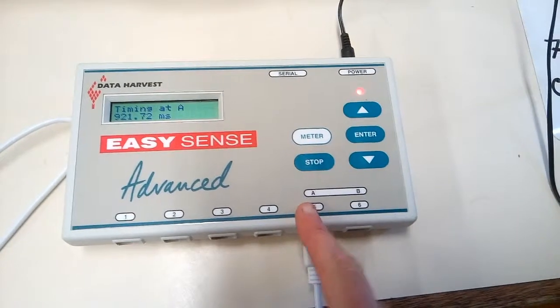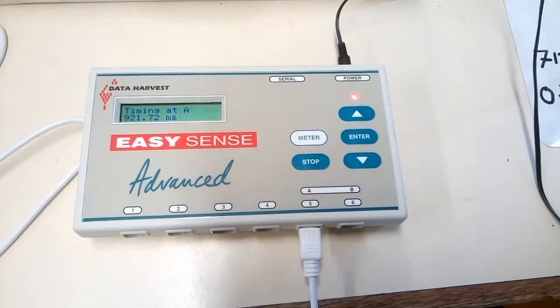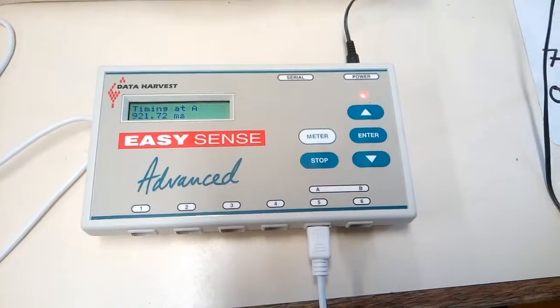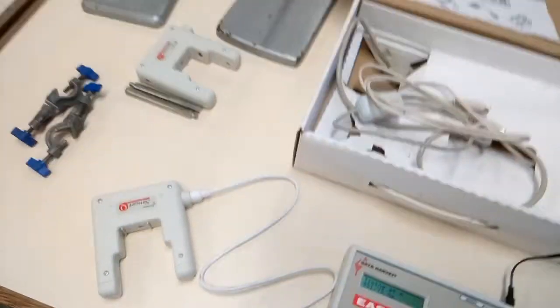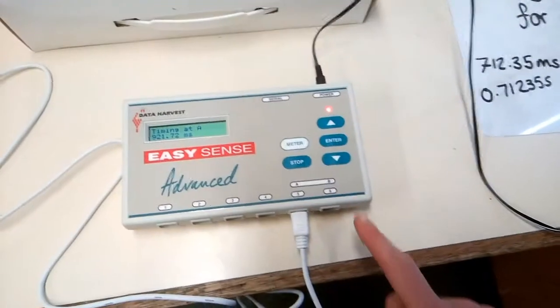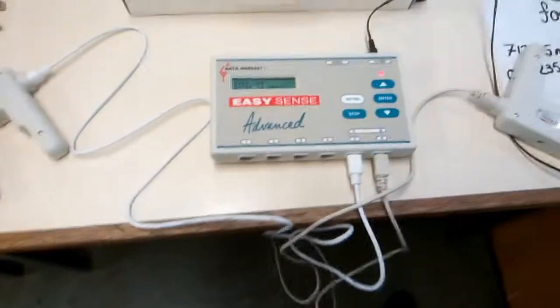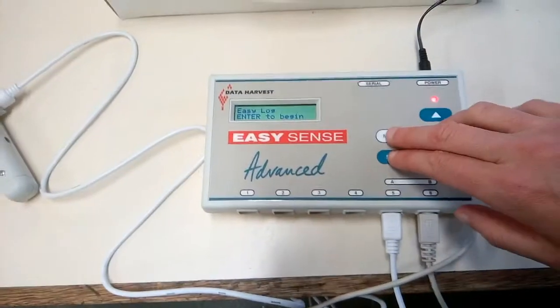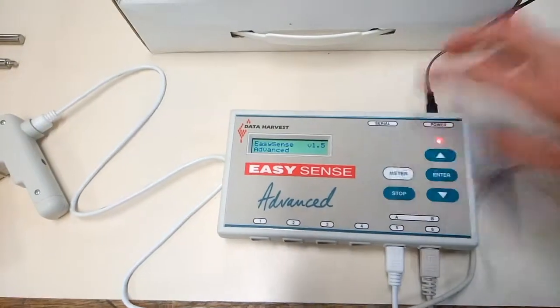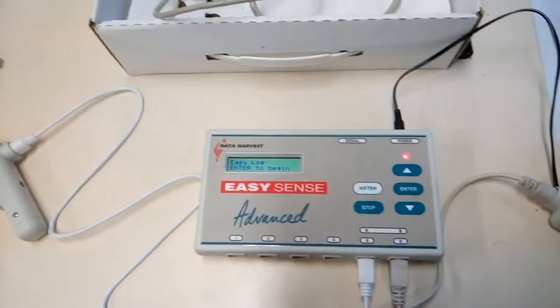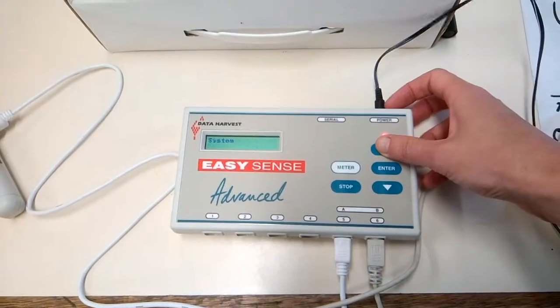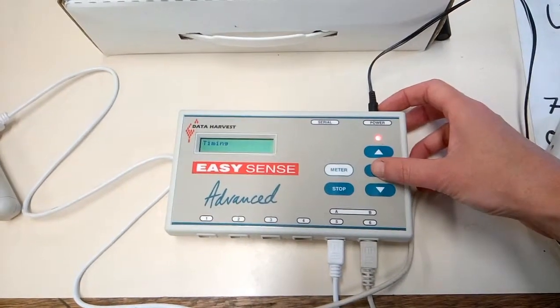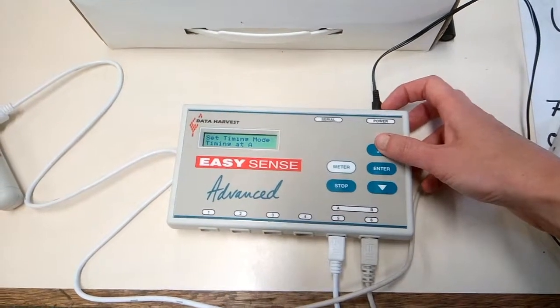The second thing that we can use it for is timing at A and B. To do that, you're going to need another light gate, and we're going to plug it in to port B, which is that one. I've plugged them both in. And to reset it so that it's not just timing at A anymore, just press all three buttons at once, and it will bring you back to the start screen. This time, scroll through until you get to timing. Press enter when you're on timing. But we don't want to set timing mode at A.